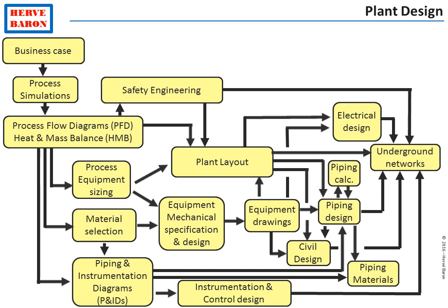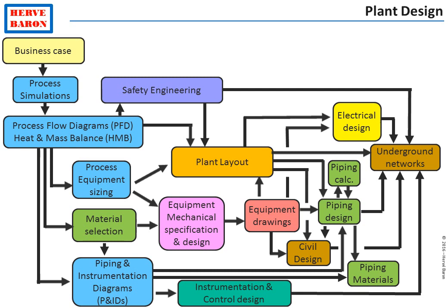This ends the presentation of the overall plant design development. We have here a synoptic showing the interfaces between the various disciplines. Process engineering is shown in blue color. Equipment engineering is shown in pink — this represents vendors of equipment. Plant layout, safety engineering, and instrumentation and automation are also shown. Piping is shown in green with its various components: calculations, design, and material selection. Electrical engineering and civil engineering are shown as well.